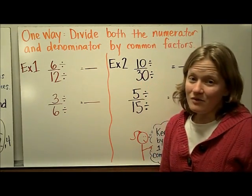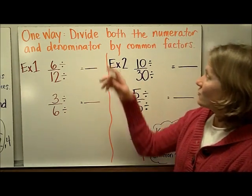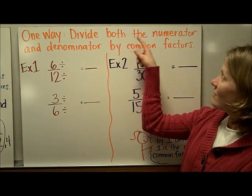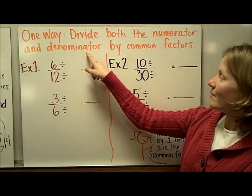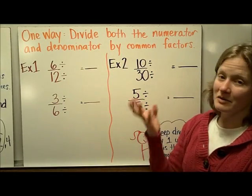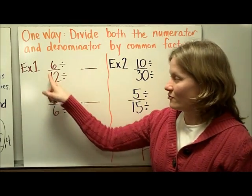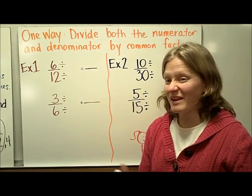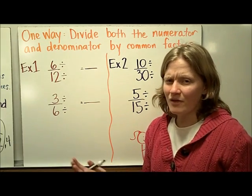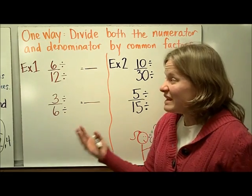One way that we can get fractions into simplest form is to divide both the numerator and the denominator by common factors. For example, if we have 6 twelfths and we want to put it in simplest form, I can think about what factors do they both have in common.